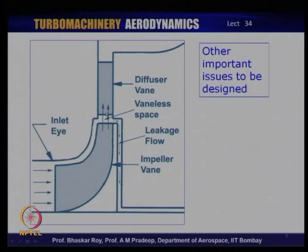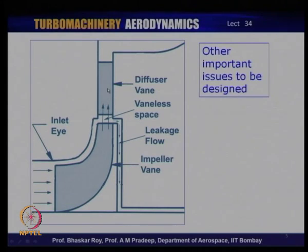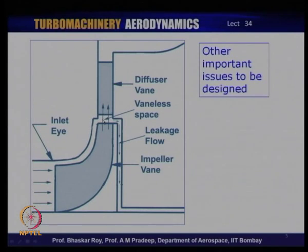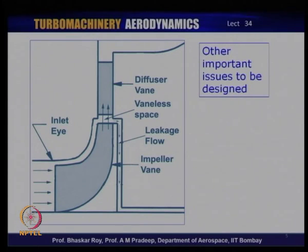All around the impeller there has to be a small gap, and one has to decide how much this gap should be — because the gap facilitates leakage of flow, which is a loss to the machine in terms of compressing work. The other thing that has to be decided is the vaneless space invariably provided between the impeller and the diffusing vane. The diffusing vane converts kinetic energy to pressure, and this vaneless space is a hugely important element. The rotor needs to be separated from the stator, but this vaneless space is also used intelligently to control the flow going from rotor to stator — reducing losses and ensuring the flow is guided in a manner that avoids stall, surge, and supersonic flow related problems.